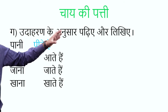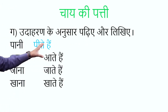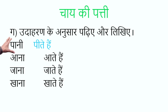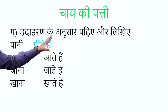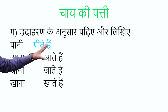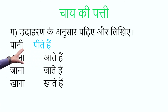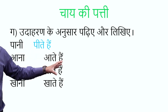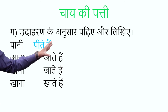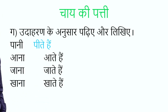Udaharan ke anusaar padhiye aur likhiye — according to the examples, first read it then write it down in your notebook. Example: paani — peete hain, we drink water. Then: aana — aate hain; jaana — jaate hain; khaana — khaate hain. So: aana ka aate hain, jaana ka jaate hain, khaana ka khaate hain. Aap apne notebook mein likh sakte hain.